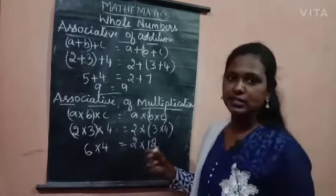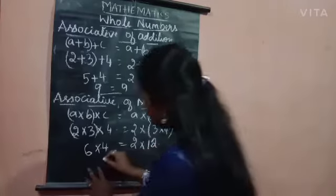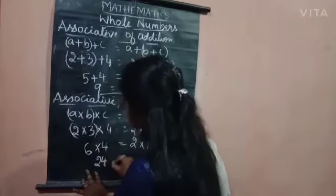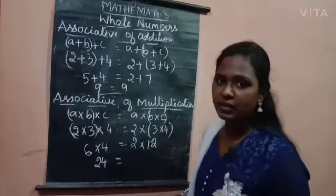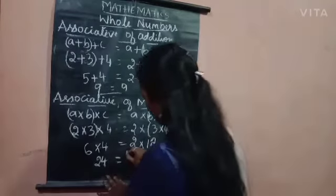Now 6 into 4 is what is the answer? It is 24. And 2 into 12 or 12 into 2, how much? Yes, it is 24.